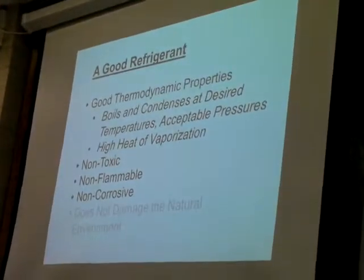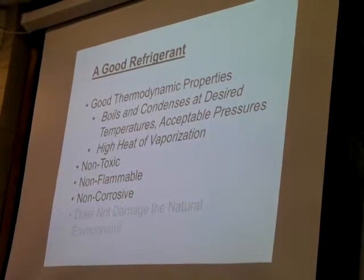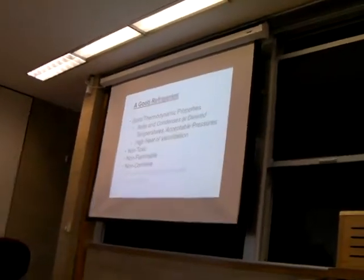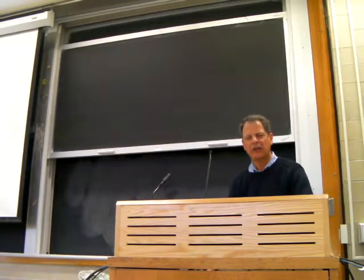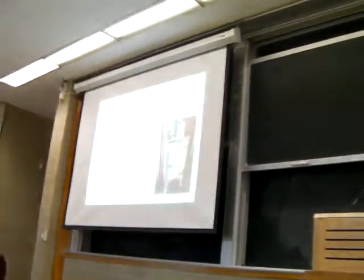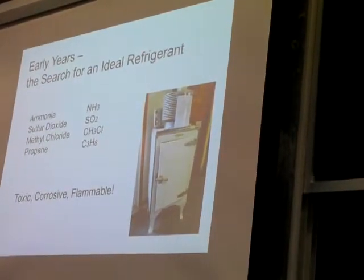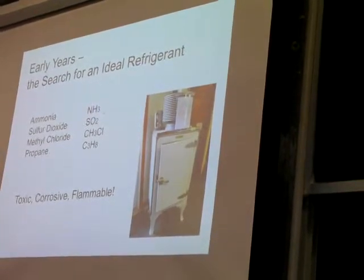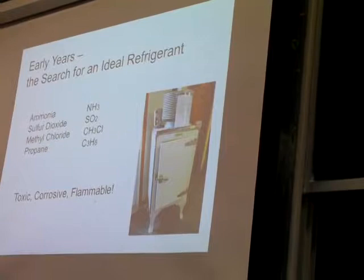That environmental criterion is shown in faint writing, because nobody knew how to measure the long-term effect on the natural environment. So it's not surprising that the original refrigerants turned out to have some bad environmental effects that were not known in the past. Back to the early history of refrigeration: the old refrigerators — there were about 100,000 of these in Canada in the 1930s — were very difficult and required a lot of maintenance. The refrigerants used were ammonia, sulfur dioxide, methyl chloride, or propane. These were good thermodynamically, but they were toxic, corrosive, and flammable.